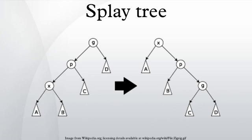For many sequences of non-random operations, splay trees perform better than other search trees, even when the specific pattern of the sequence is unknown. The splay tree was invented by Daniel Dominic Sleator and Robert Endre Tarjan in 1985.